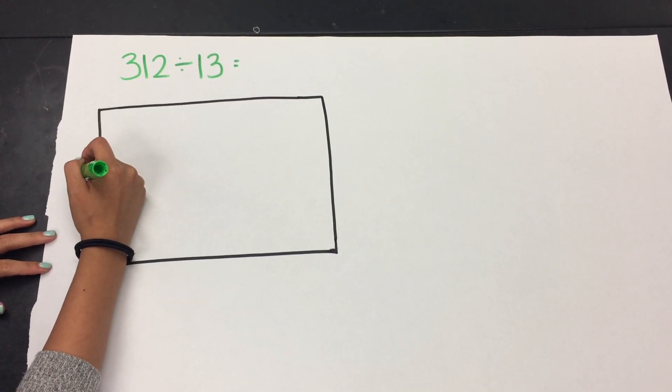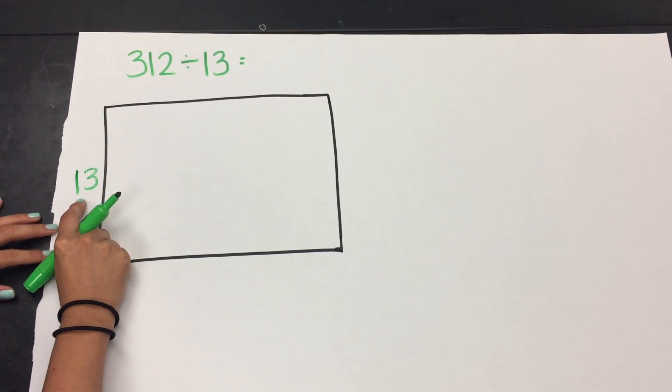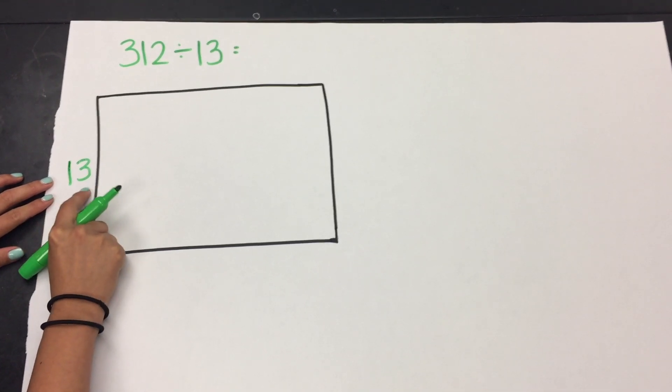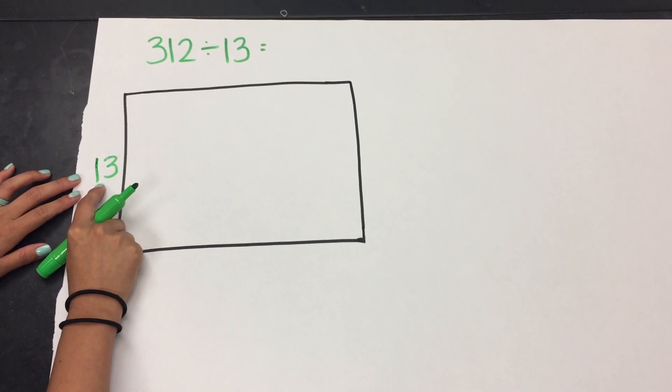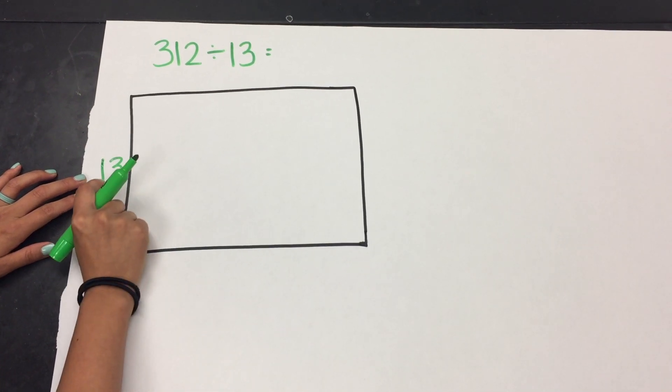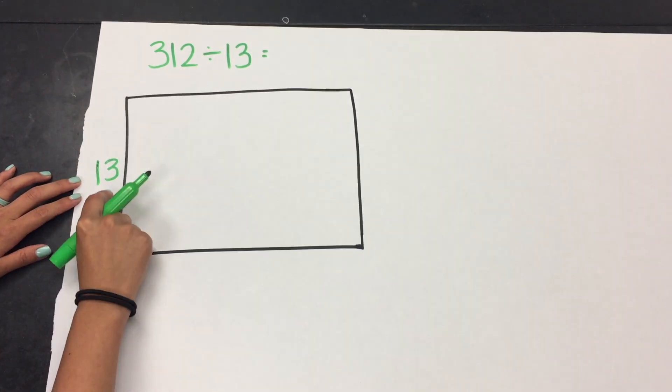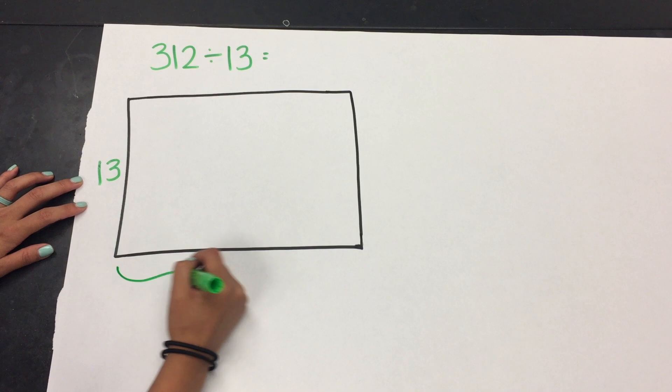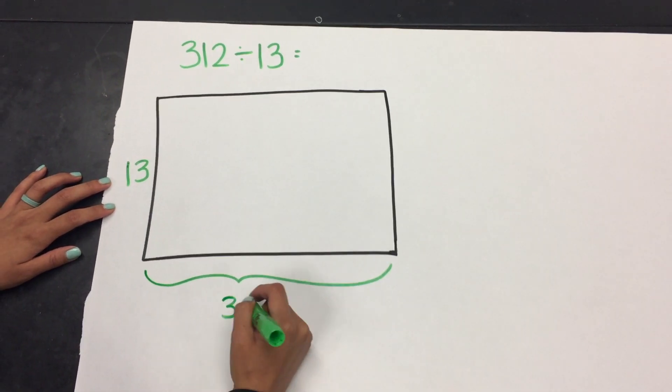So I'm going to start by writing my divisor on my side. And remember, I'm thinking of my 13 as the amount in a group. So as I'm solving my area model, I want to know the number of groups that I can make of 13 until I reach my total of 312.